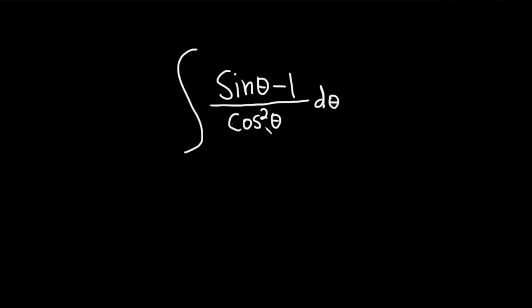So the big problem here is that we have this cosine squared on the bottom. So I'm thinking one way to do this would be to break it up into two pieces because we have a minus up top.